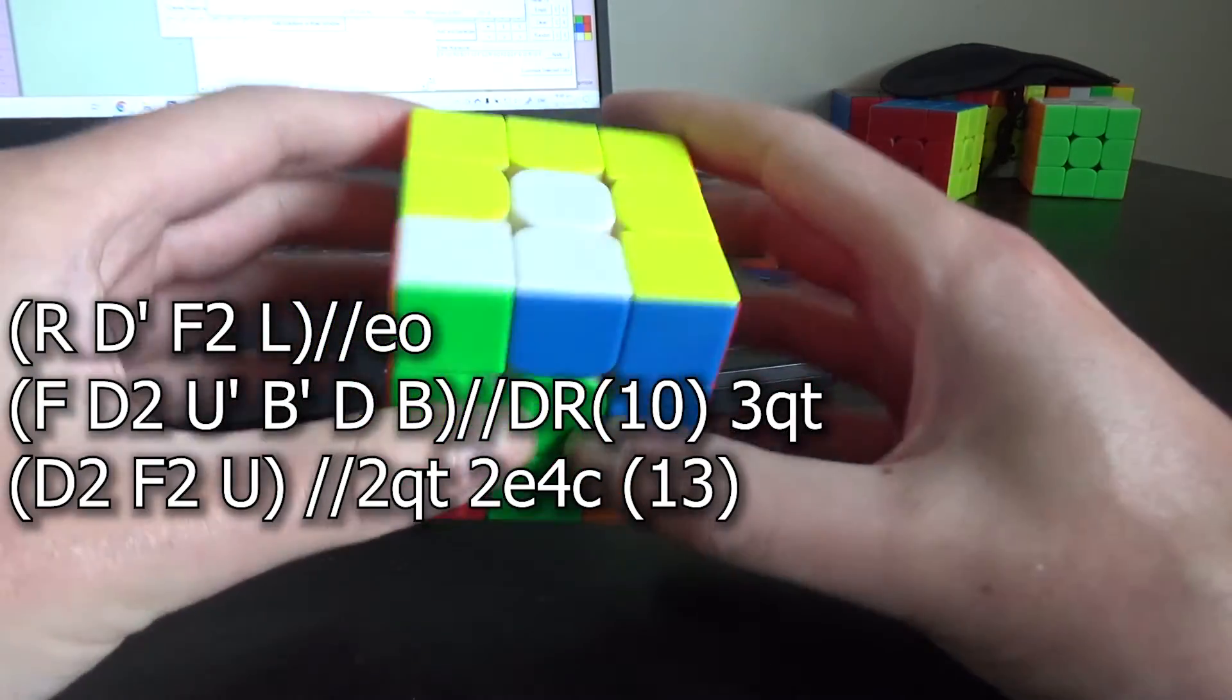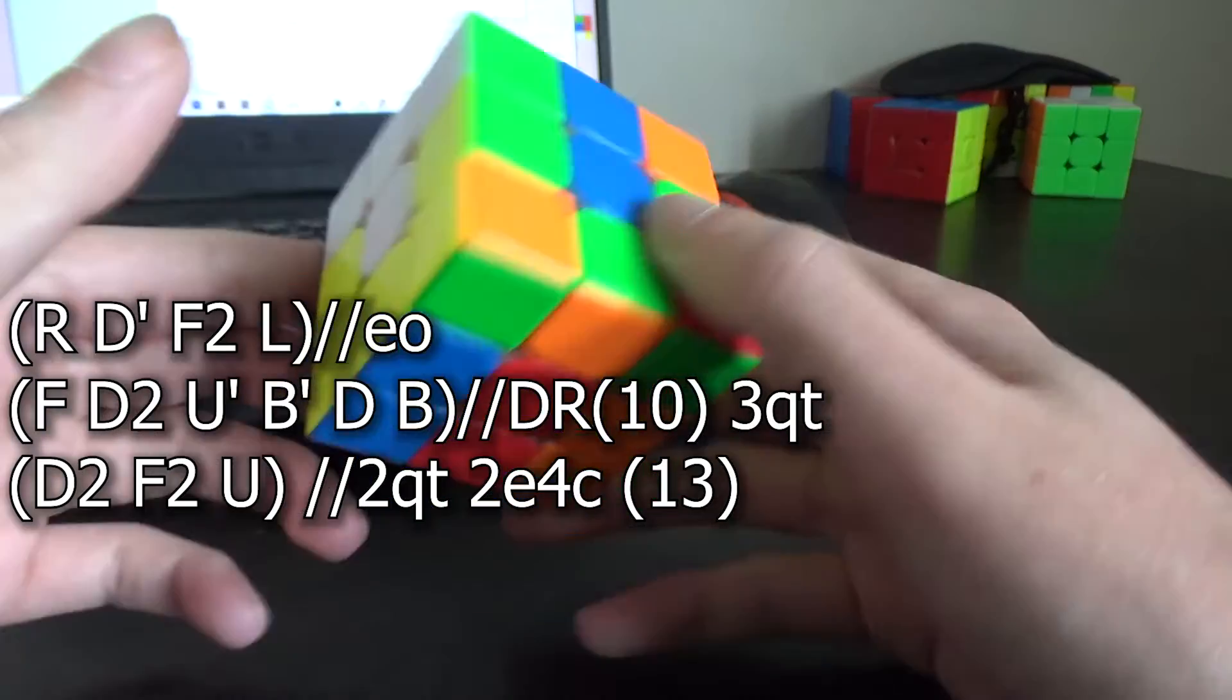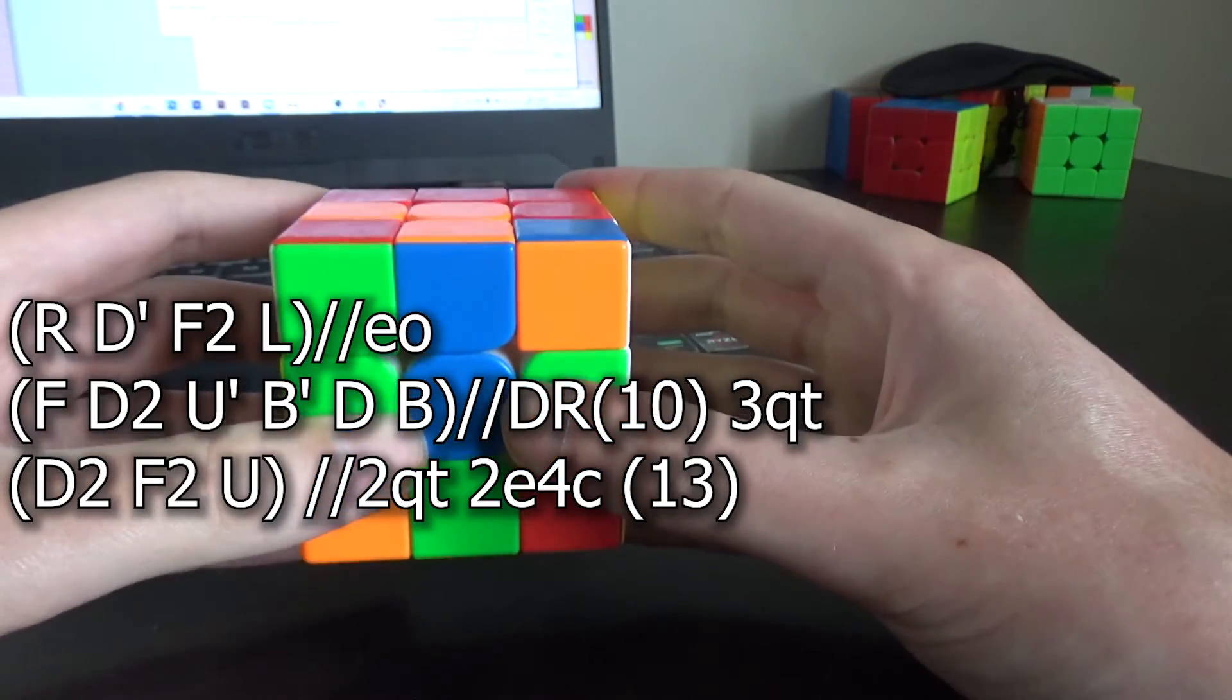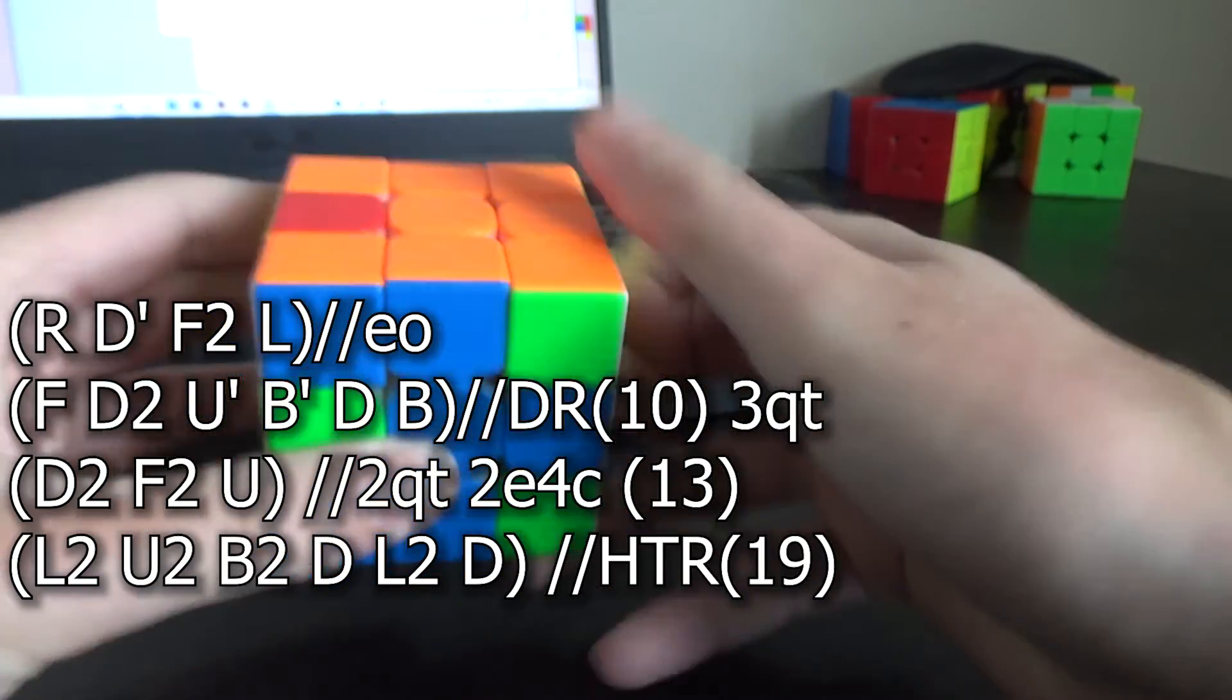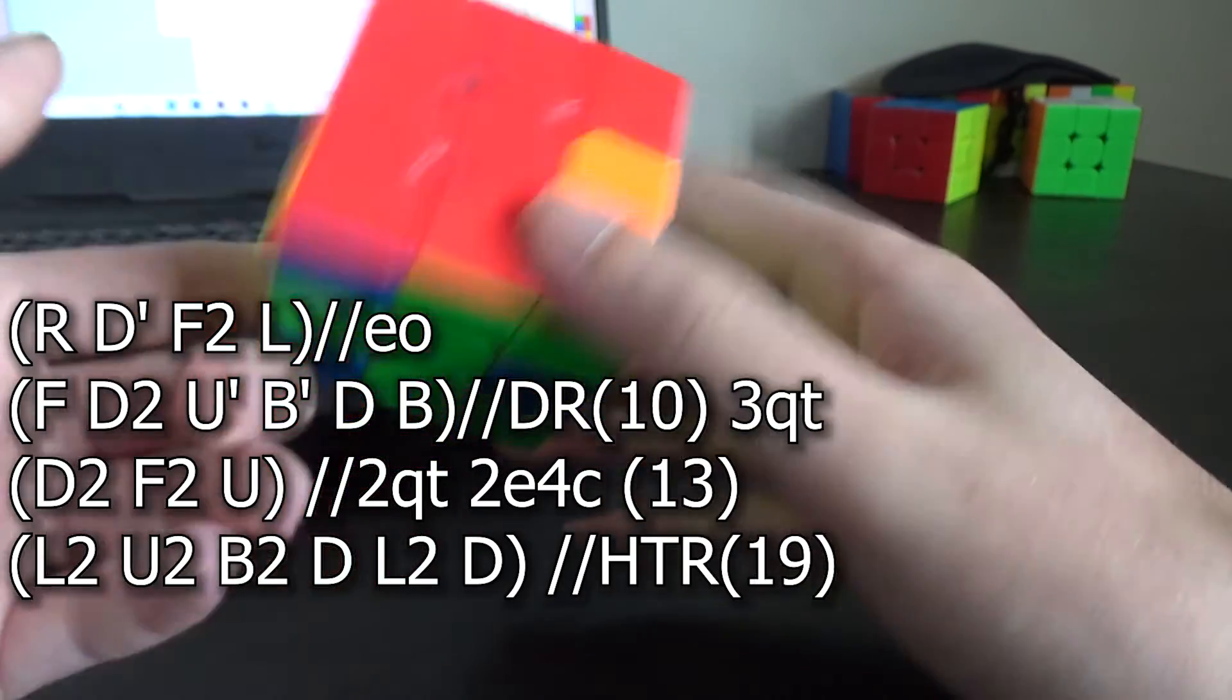So I tried a bunch of different ways to get to HTR and the one I went with was a sort of wide move variation of the first few moves which is D2 F2 U. So we get 2e4c again but the HTR I did was L2 U2 B2 D L2 D. And corners, they're a wide perm away.